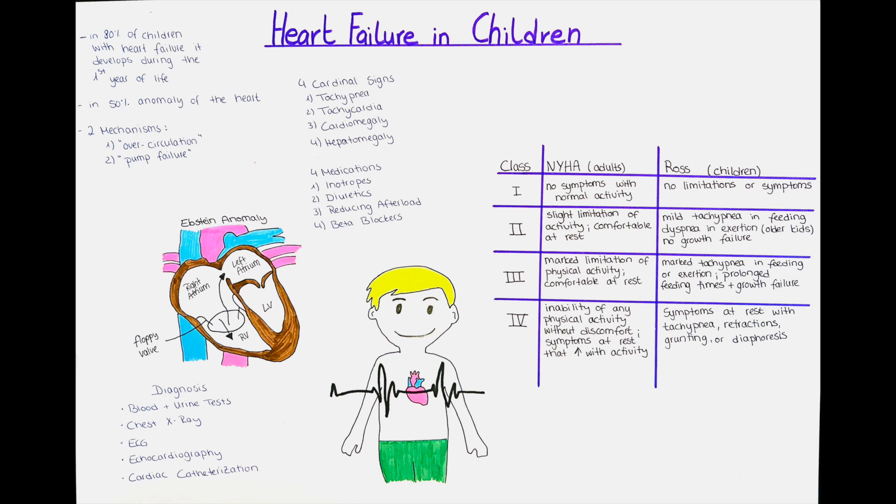Now we will talk about the pathophysiology of pediatric heart failure. There are two mechanisms involved. The first is the increased cardiac workload. Many infants experience heart failure due to the heart having to work harder than it usually should. Even though the heart muscle is able to contract properly, enough blood will not be supplied to the tissues. This can be due to a left to right shunt or a valvular insufficiency.